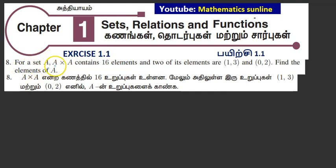For the set A, A cross A contains 16 elements and 2 of its elements are given. Find the elements of A.